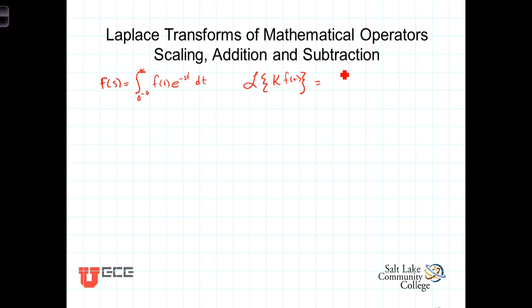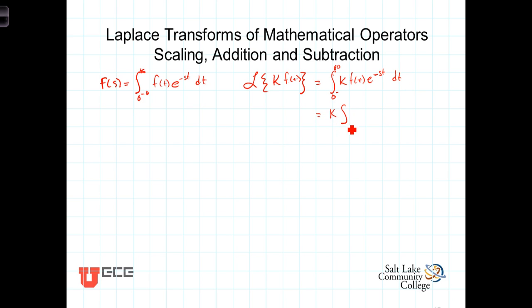From the definition of the transform, we have that this is equal to the integral from 0 minus to infinity of k f of t, e to the minus st dt. Well, k is just a constant — it comes outside the integral — and that's then equal to k times the integral from 0 minus to infinity of f of t, e to the minus st dt.